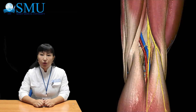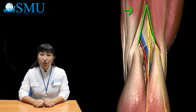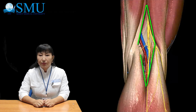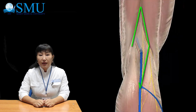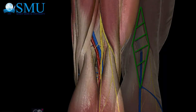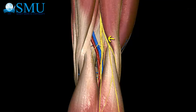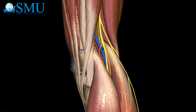Let's talk about the popliteal fossa. The borders of the popliteal fossa are: superomedially the semitendinosus and semimembranosus muscles; superolaterally the biceps femoris; and inferiorly the medial and lateral heads of the gastrocnemius muscle. The neurovascular bundle of the fossa is the tibial nerve, fibular nerve, popliteal artery, and popliteal vein.